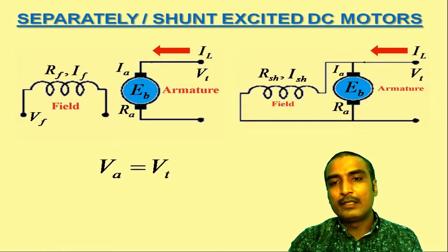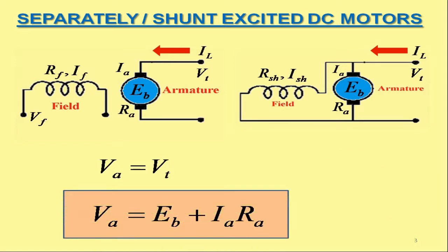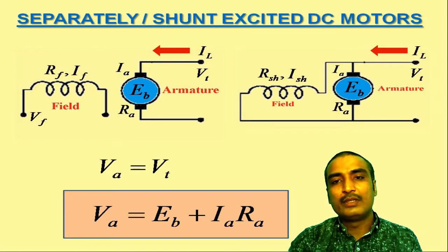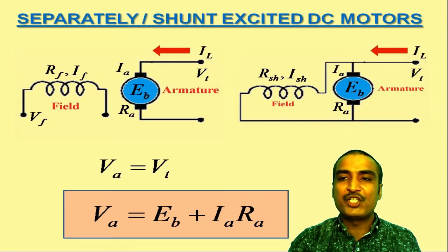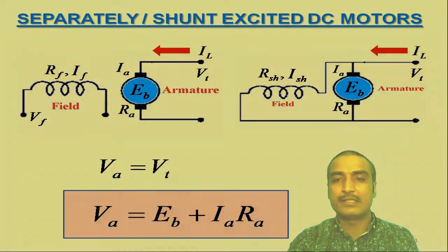Hence, we may represent the current-voltage relationship for these two motors as Va equals Eb plus Ia Ra. This is to remind you that the current and voltage relationships in DC machines have already been discussed in one of my previous lectures in this series.